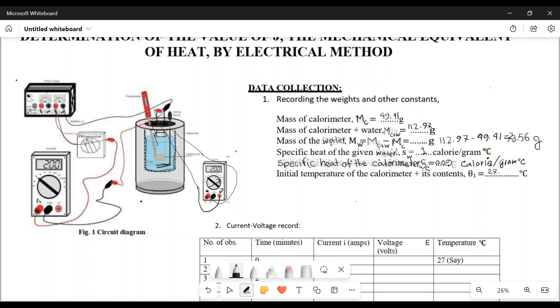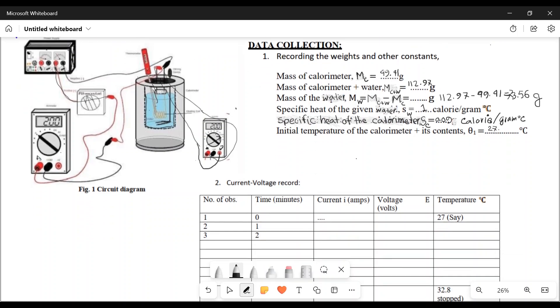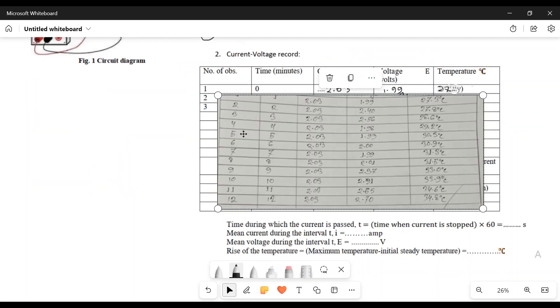We have to record the current value and the voltage value. For one minute, the current is 2.03, the voltage is 2.40, and the temperature is 27.3 degrees.